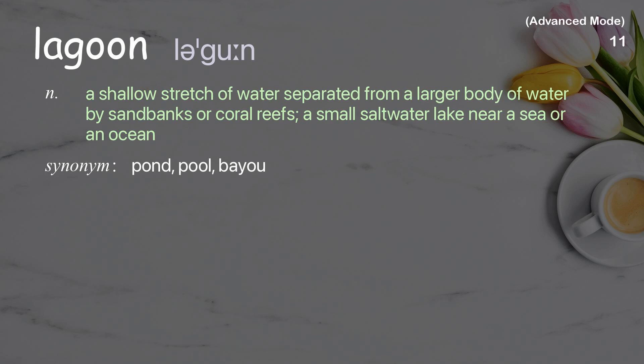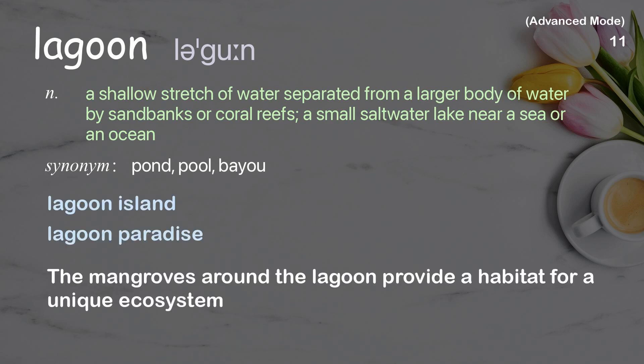Lagoon: A shallow stretch of water, separated from a larger body of water, by sandbanks or coral reefs; a small saltwater lake, near a sea or an ocean. Examples: Lagoon island. Lagoon paradise. The mangroves around the lagoon provide a habitat for a unique ecosystem.